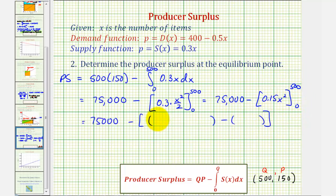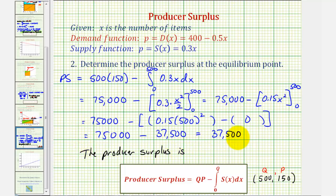So when x is 500, we'll have 0.15 times 500 squared minus, when x is zero, of course this is zero. So this is going to be 75,000 minus this comes out to 37,500, and this difference is 37,500. Which means the producer's surplus is 37,500 dollars.